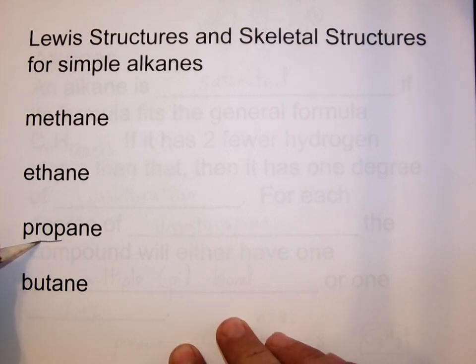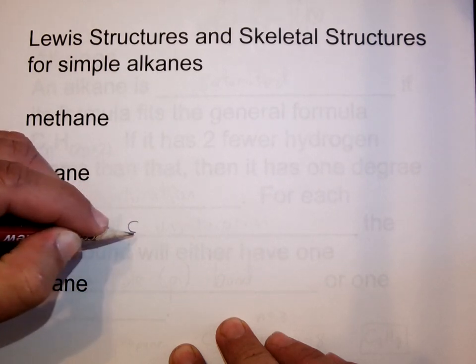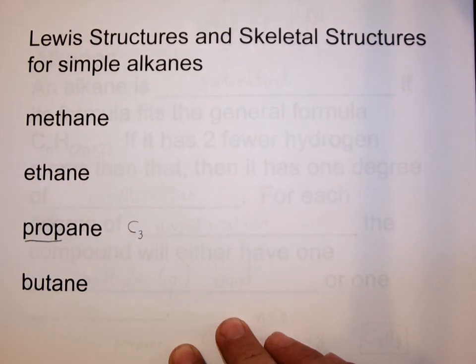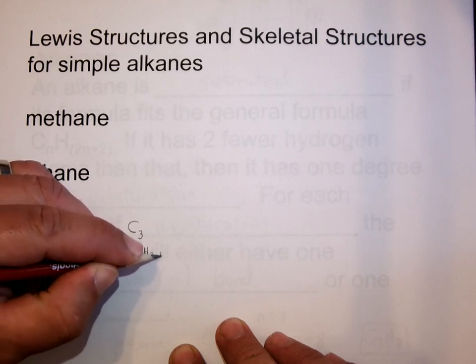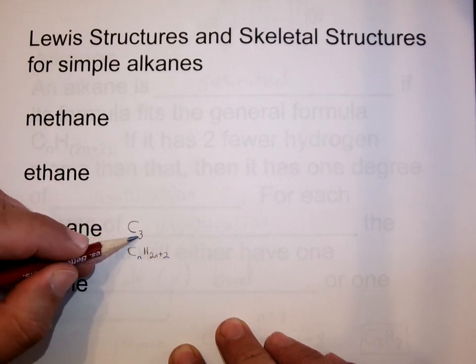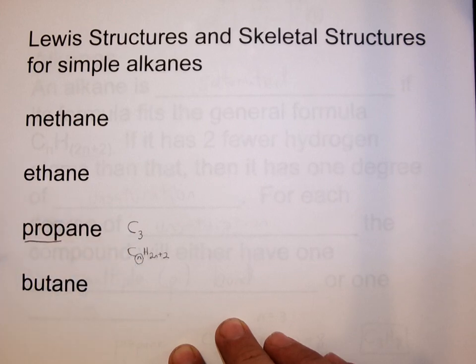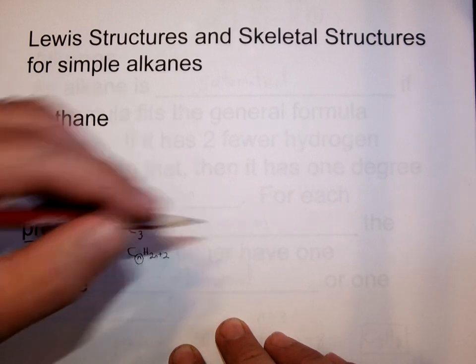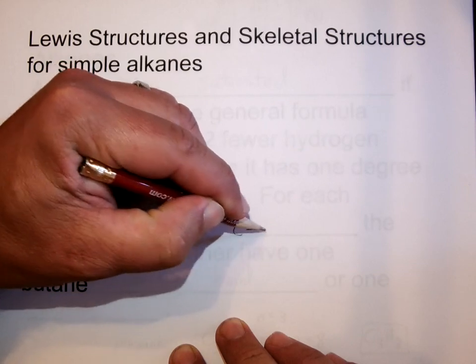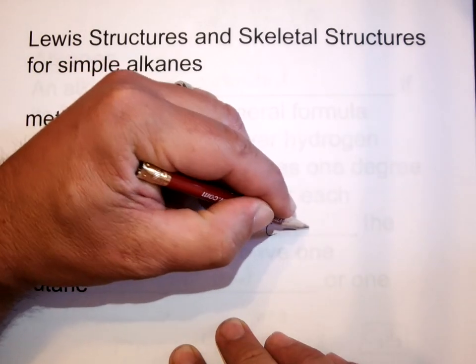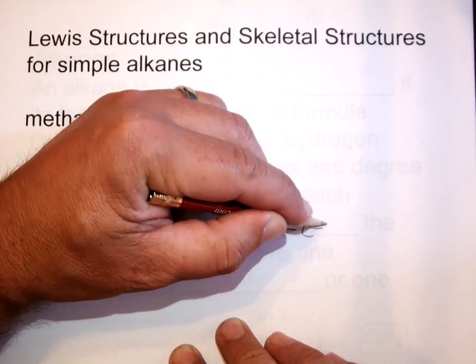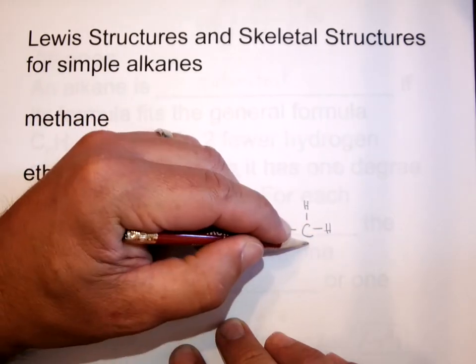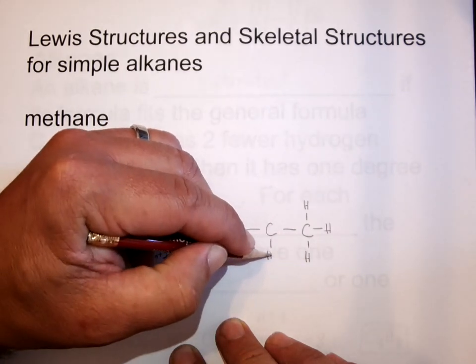So, for example, propane. The root prop means three carbons, so that would be C3, and in our formula, CnH2n plus 2, three carbons would mean n equals 3. So, three carbons, and if you wanted to draw a Lewis structure for propane, you'd link the three carbons with single bonds, and then you'd just add enough hydrogens to fill the octet rule for every single carbon.